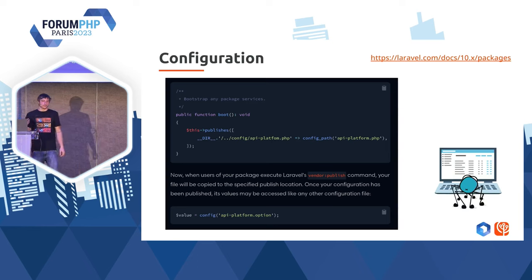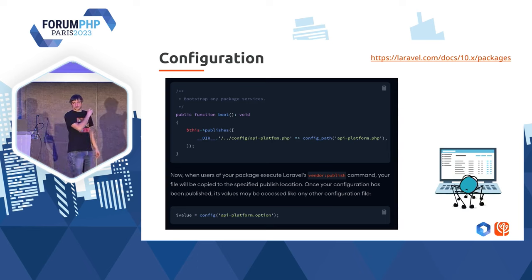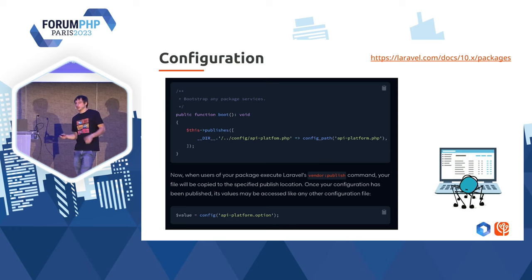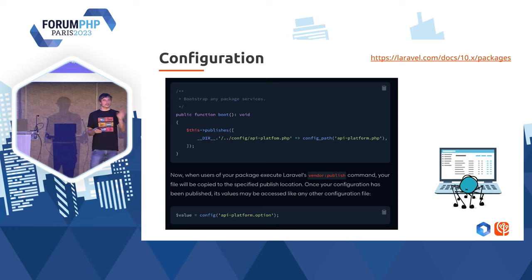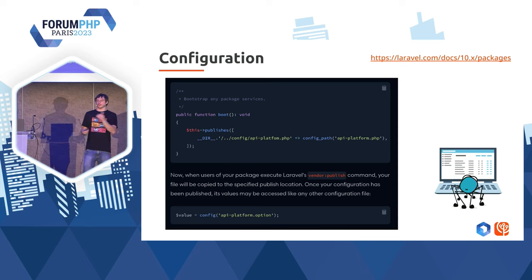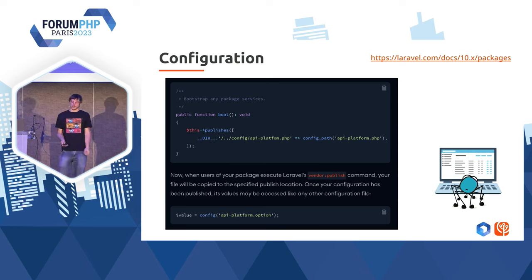Pour cette configuration, vous avez juste à, dans la fonction `boot` du provider, publier le fichier de configuration à l'installation. Vous avez juste un tableau PHP dans un fichier, et ça, c'est mis sur les projets des utilisateurs lorsqu'on exécute `artisan vendor:publish`. J'ai vraiment trouvé ça très sympa et très accessible.